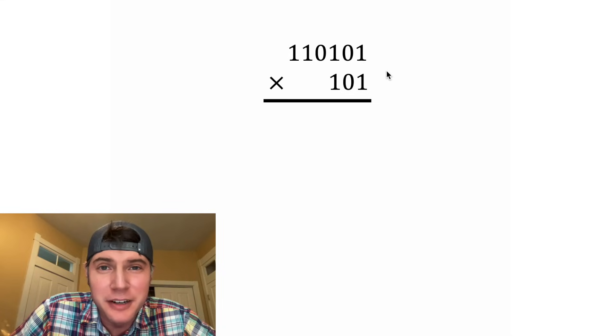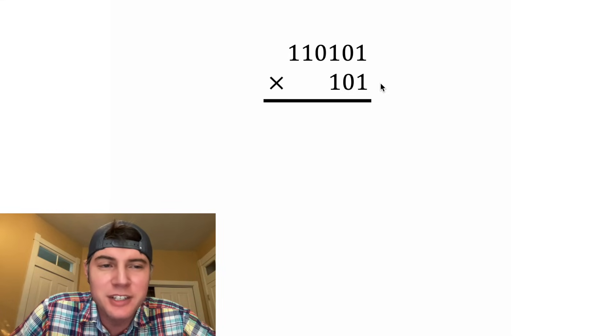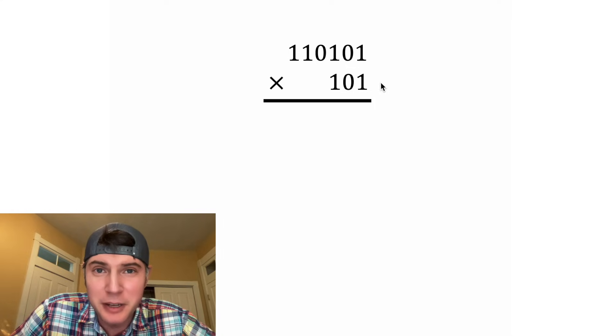Hey guys, let's multiply some numbers in binary notation. We have 1 1 0 1 0 1 times 1 0 1. So we're going to multiply this the way we usually do.